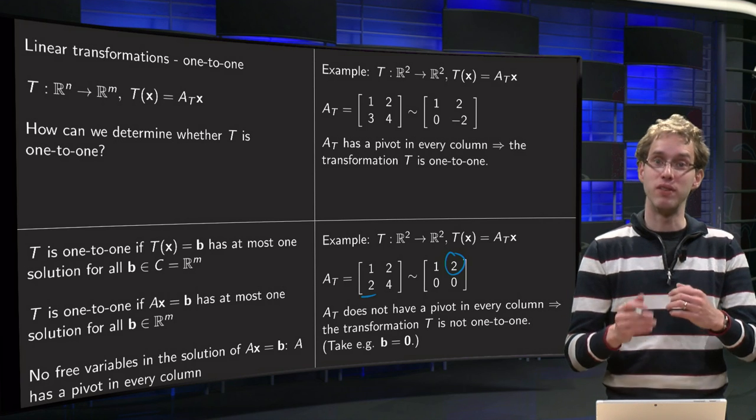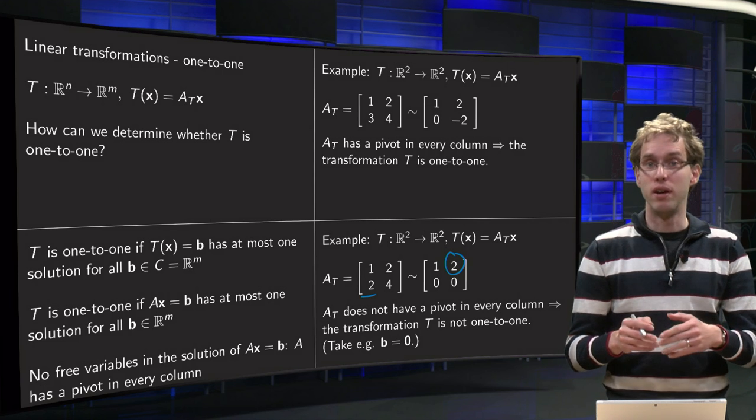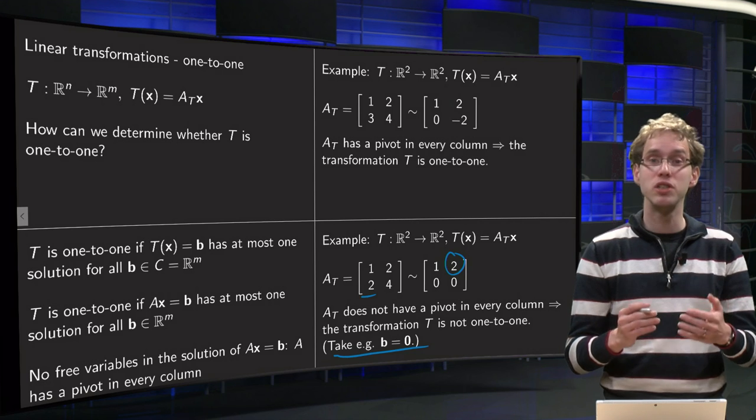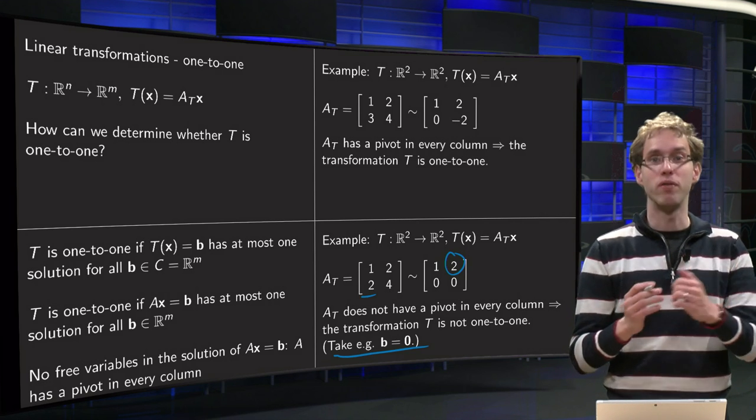Well we look at the standard matrix and use row reduction and we see we have over here a column without a pivot, which means that we have a free variable. So that means that for example Ax equals 0 has infinitely many solutions and not only one, so that means our transformation is not 1 to 1.